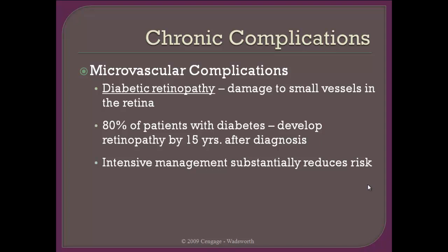A type of damage that can occur is diabetic retinopathy, which is damage to the retina — the very thin layer of cells that line the back of the eyeball that allow light to be sensed. Notably, 80% of patients with diabetes will develop retinopathy by 15 years after diagnosis. About the only way to prevent that is intensive management of a person's glucose. If a person has elevated glucose levels for an extended period of time, retinopathy will occur.